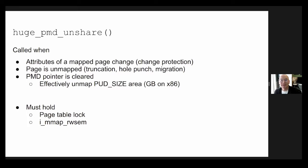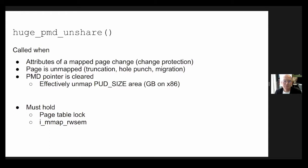This happens whenever you change protection, do truncation on a file, or maybe a page gets unmapped in that shared section for migration. When we call huge PMD unshare, it has to hold the page table lock — that seems obvious since it's messing with the page table — and it also has to hold the IMAP SEMA. The sharing is keyed off of the ref count of the PMD page itself. So that's a very brief overview on huge PMD sharing.